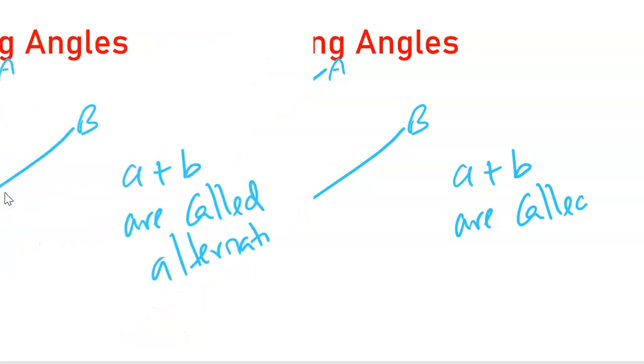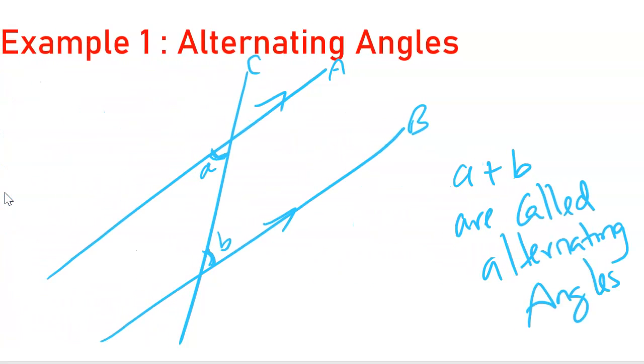They are called alternating angles and therefore the property of alternating angles is angle A is equal to angle B. Whatever the value of this angle is, that is the same as this angle also.